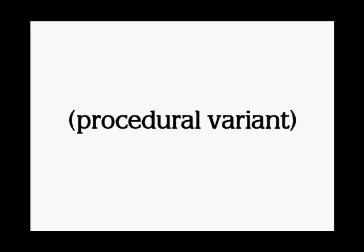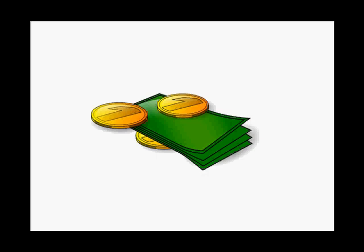Tried and true recipe number 4.5 is to put user functions everywhere. Why 4.5? Because actually it's a procedural variant. I am going to take an example that talks to everyone: money.